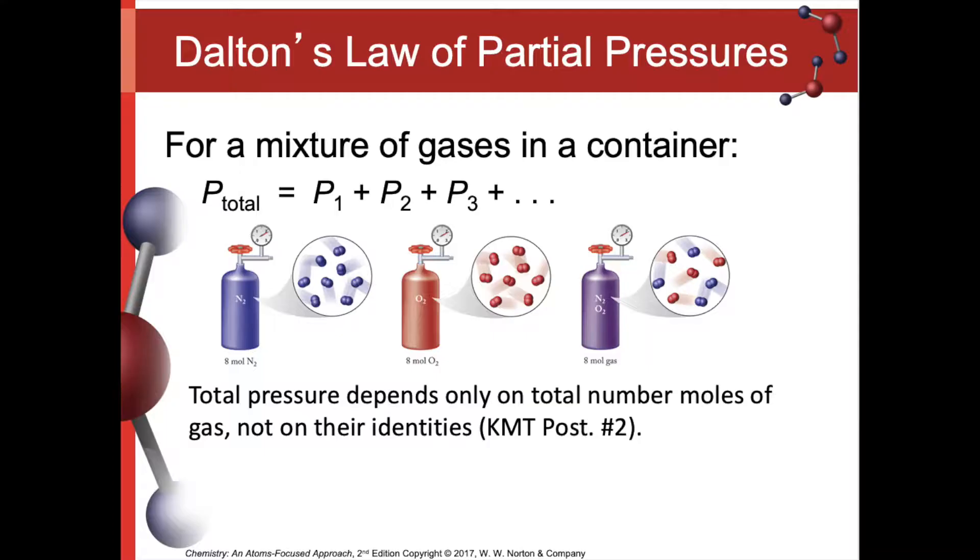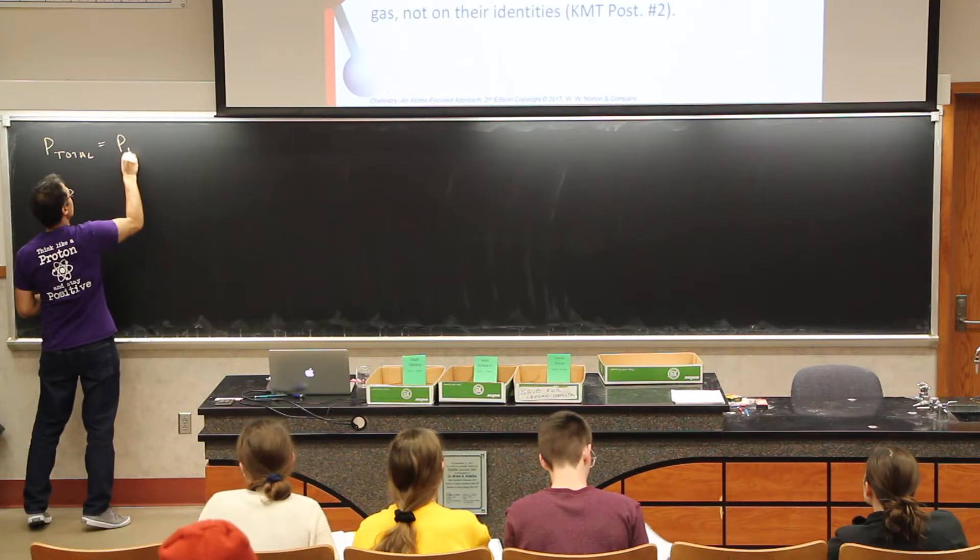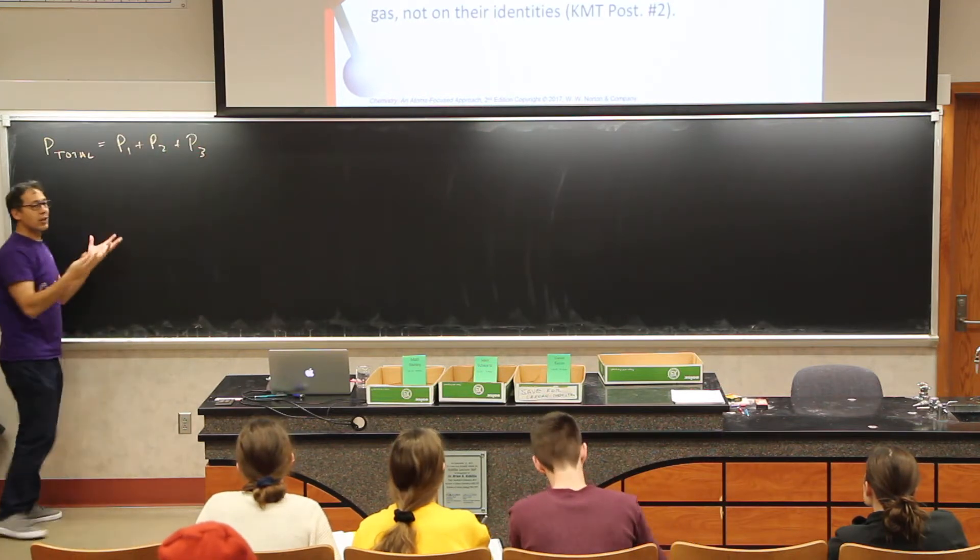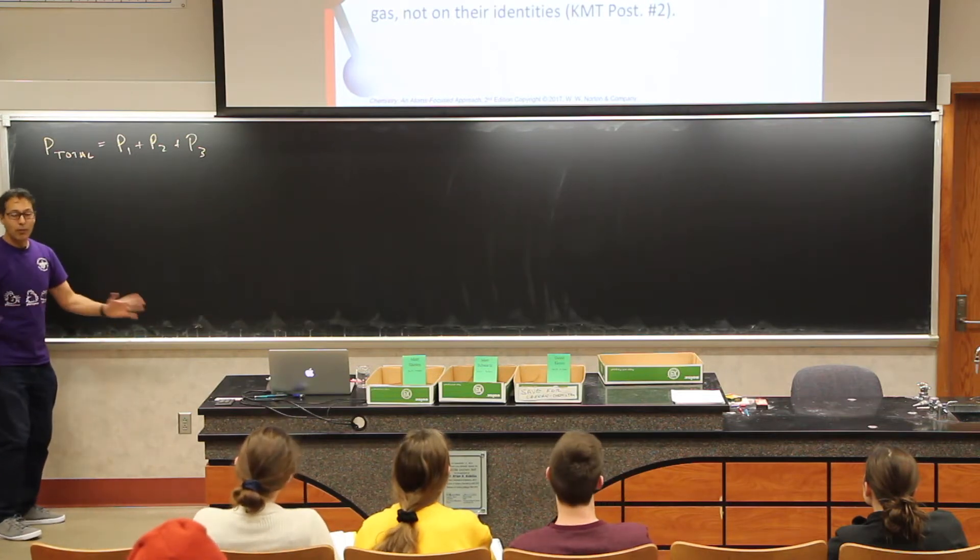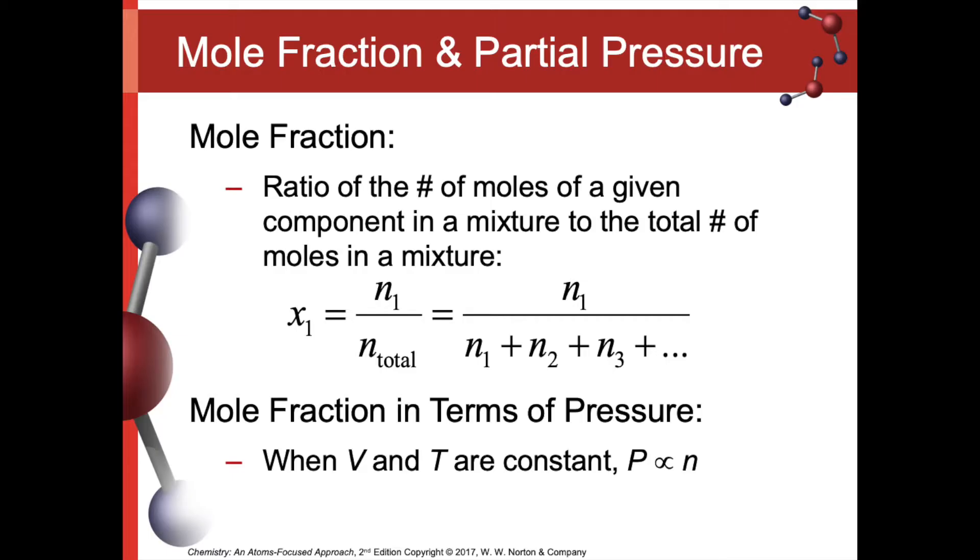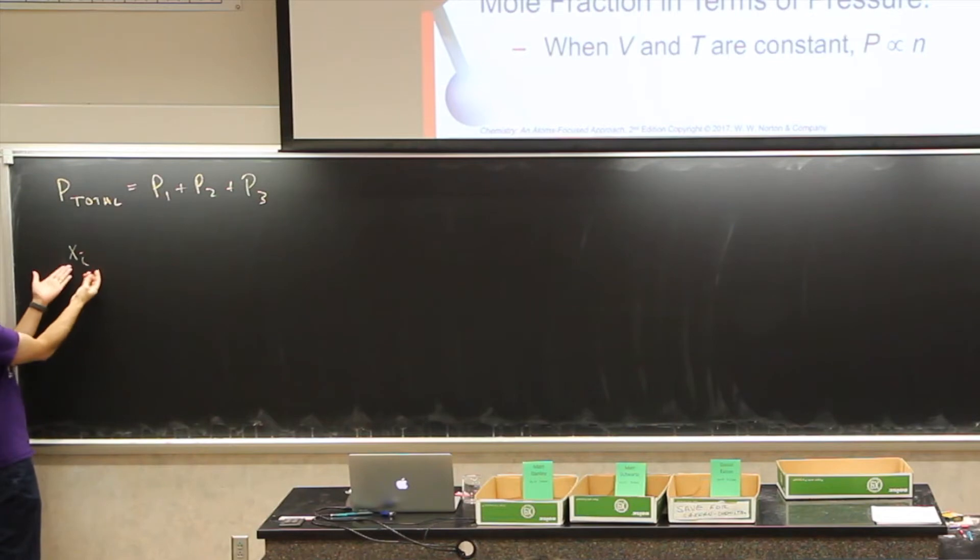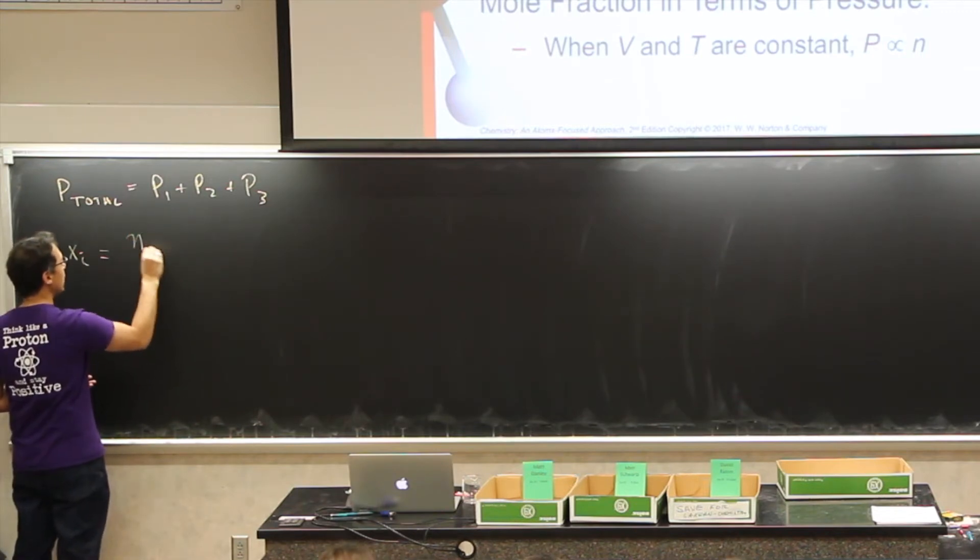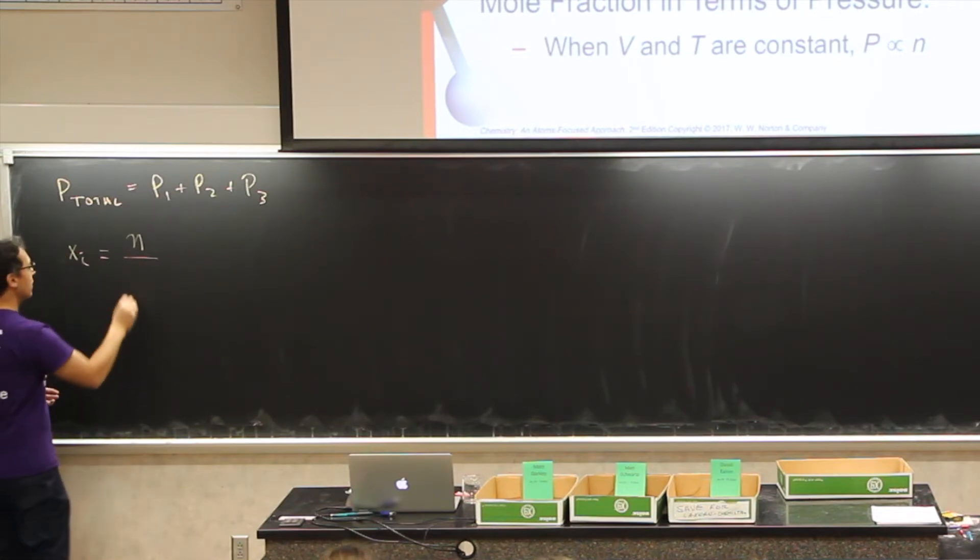An example of this is scuba diving tanks. If we have a scuba diving tank, we would say the pressure total inside that tank would be equal to the partial pressures of whatever gases we're talking about. That could be like P1 plus P2 plus P3, whatever gases we have. It doesn't matter what the gases are or their molar masses.